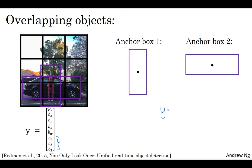So what you do is you define the class label to be, instead of this vector on the left, you basically repeat this twice. So you would have PC, BX, BY, BH, BW, C1, C2, C3 - these are the eight outputs associated with anchor box one. And then you repeat that: PC, BX, and so on, down to C1, C2, C3 - another eight outputs associated with anchor box two.